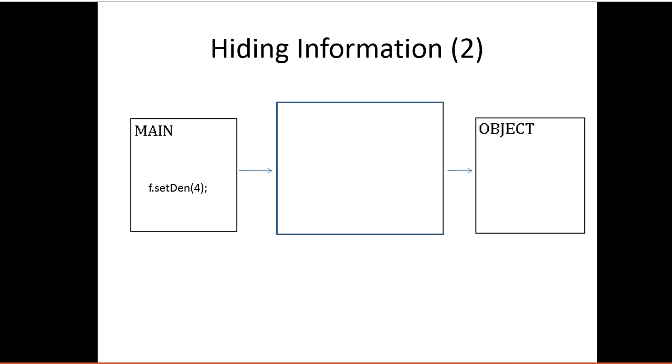So essentially, we're going to have some instance methods. And those instance methods are going to be used to access fields and change fields. And that's the only way you're going to be able to get at them. So we might make a method called setDen. So we can see here we're invoking this instance method using the implied object f. And we're passing this method four. So it might look something like this. And we can see in here that what the method does is it says, if a is not equal to zero, set den equal a, else printout invalid.